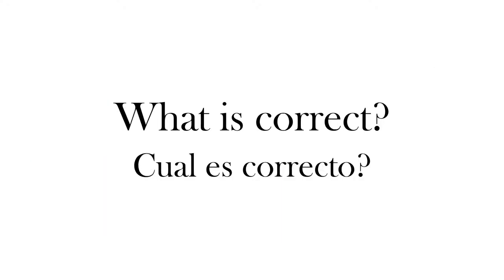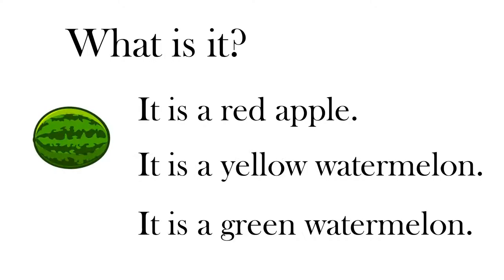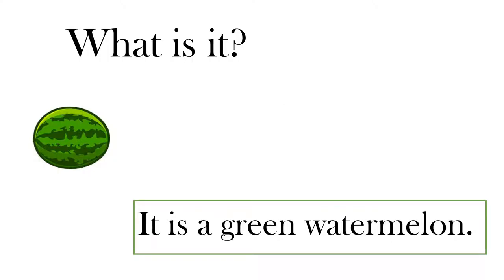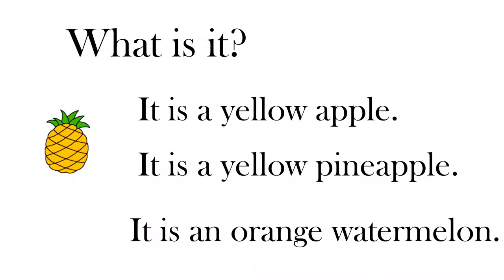What is correct? ¿Cuál es correcto? What is it? It is a red apple. It is a yellow watermelon. It is a green watermelon.